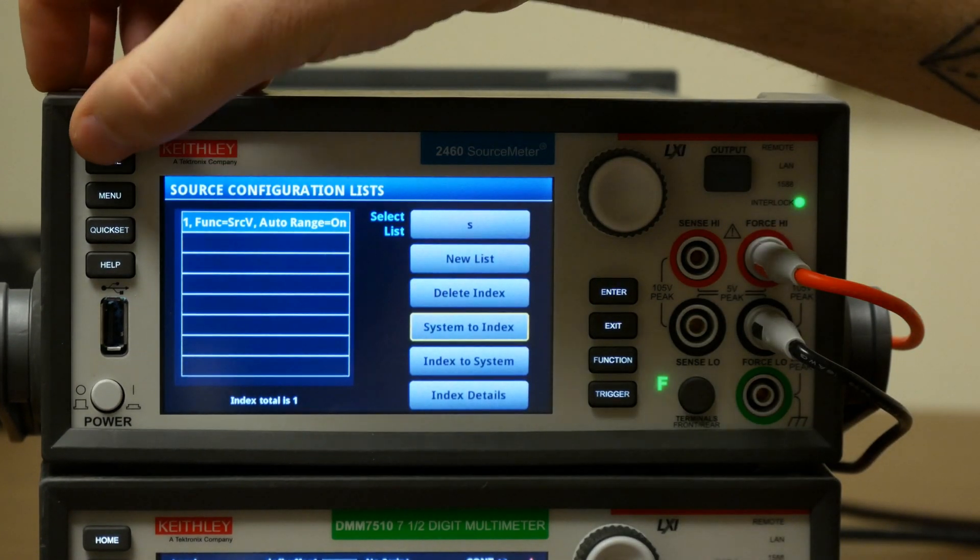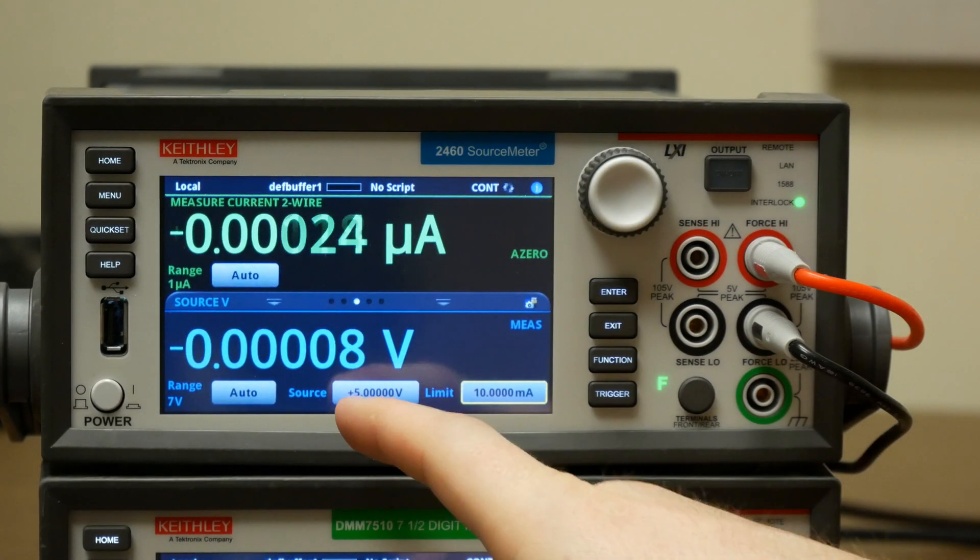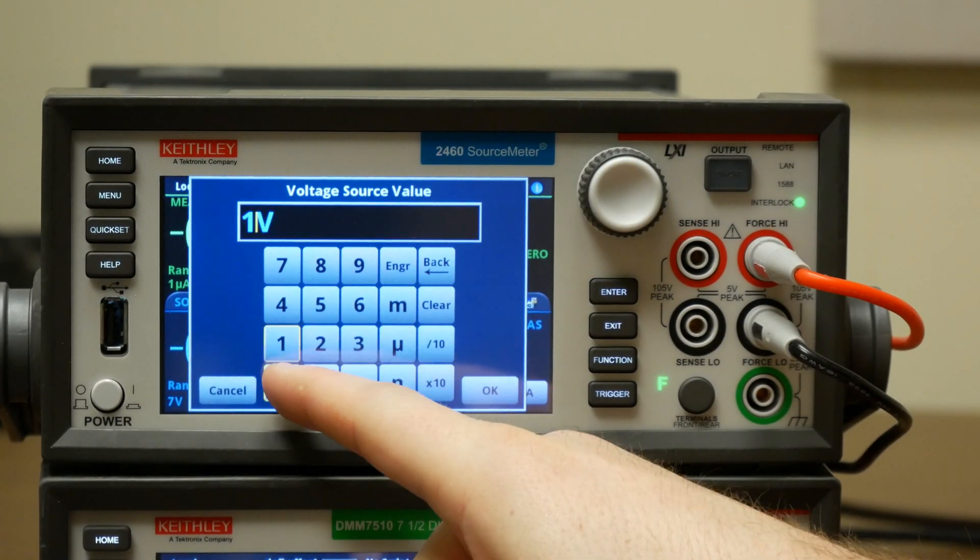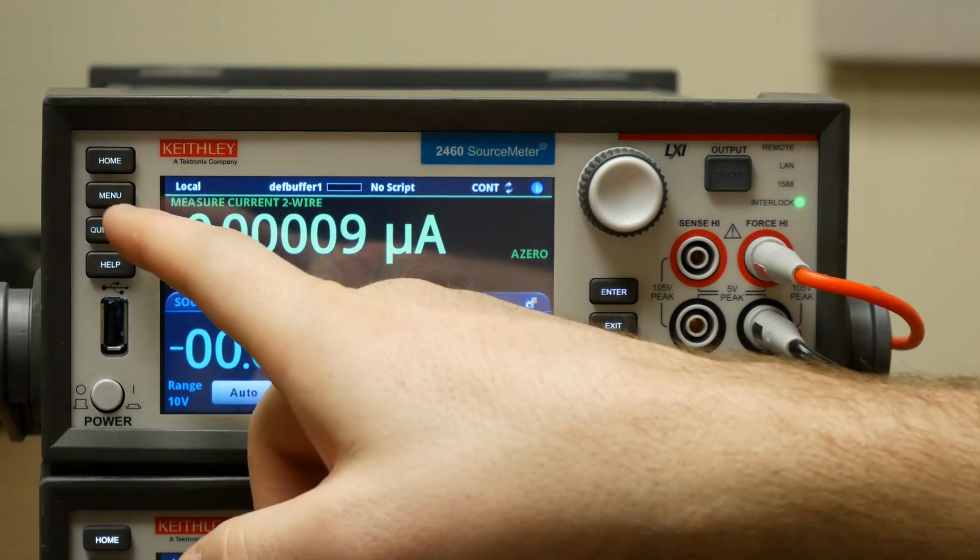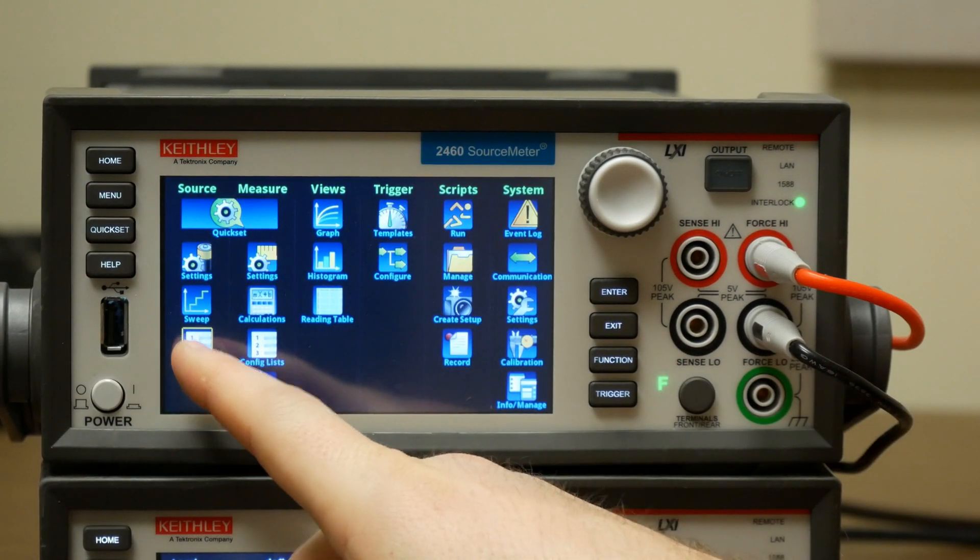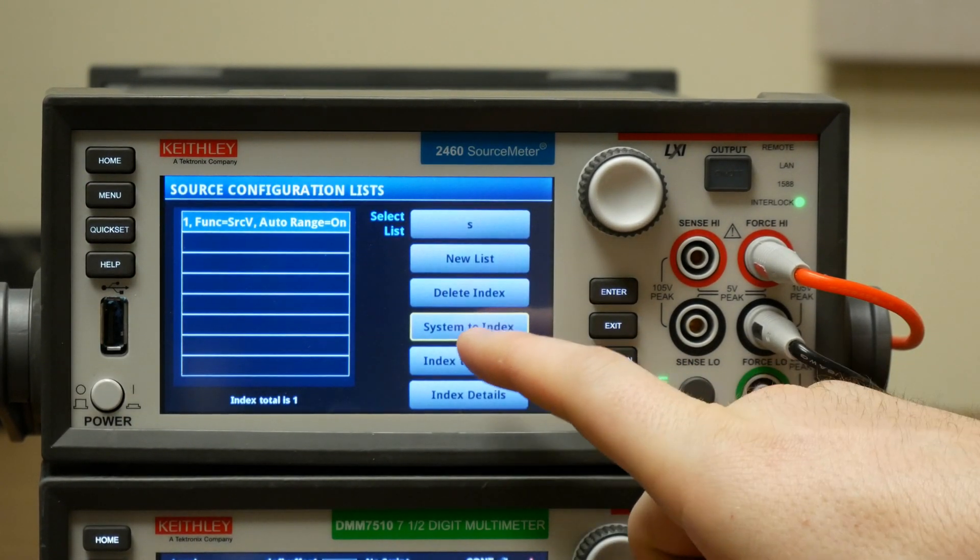Now if we go back to the home screen and we change this to 10 volts, we can go back to menu and config list and press system to index again.